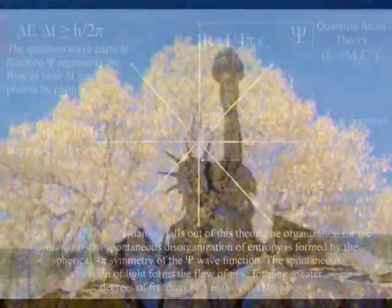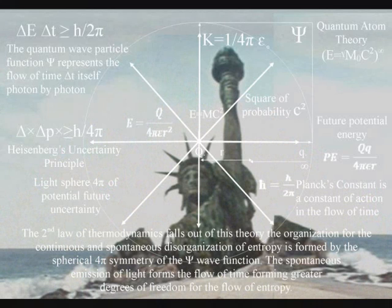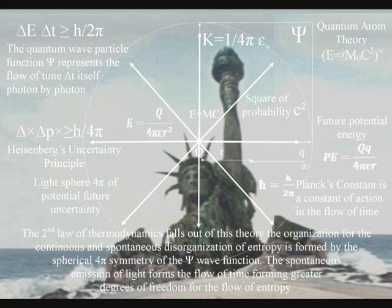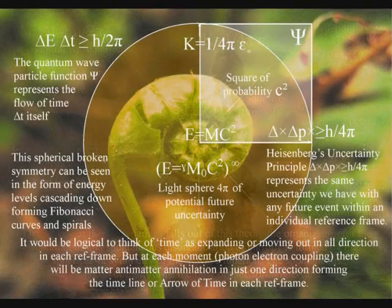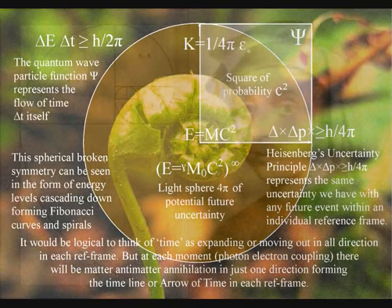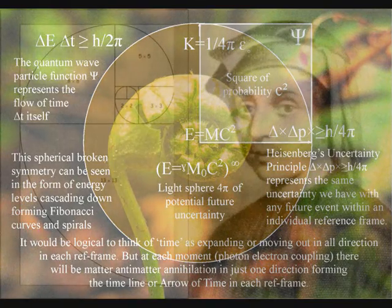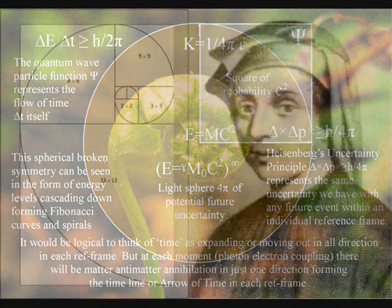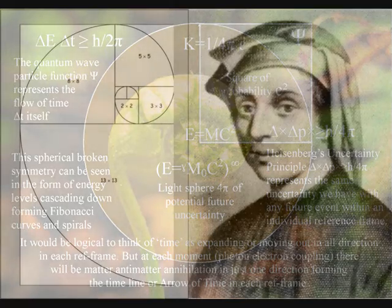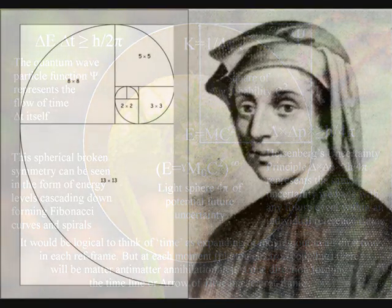As the energy levels cascade down, it forms greater degrees of freedom for the disorganization of entropy that we have in the second law of thermodynamics. This broken symmetry can be seen in the physical world as spiral symmetry in the form of the Fibonacci spiral being visible almost everywhere in nature.